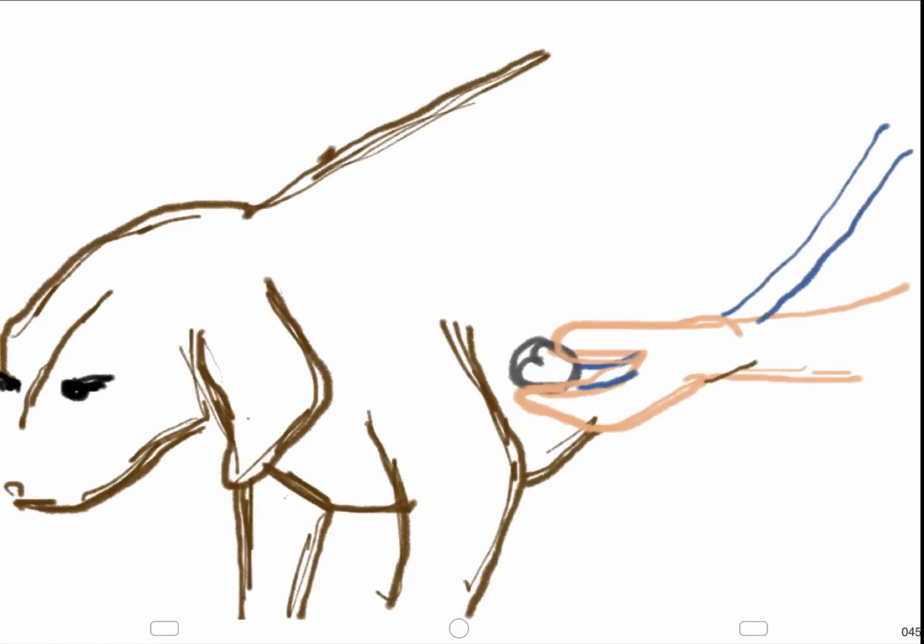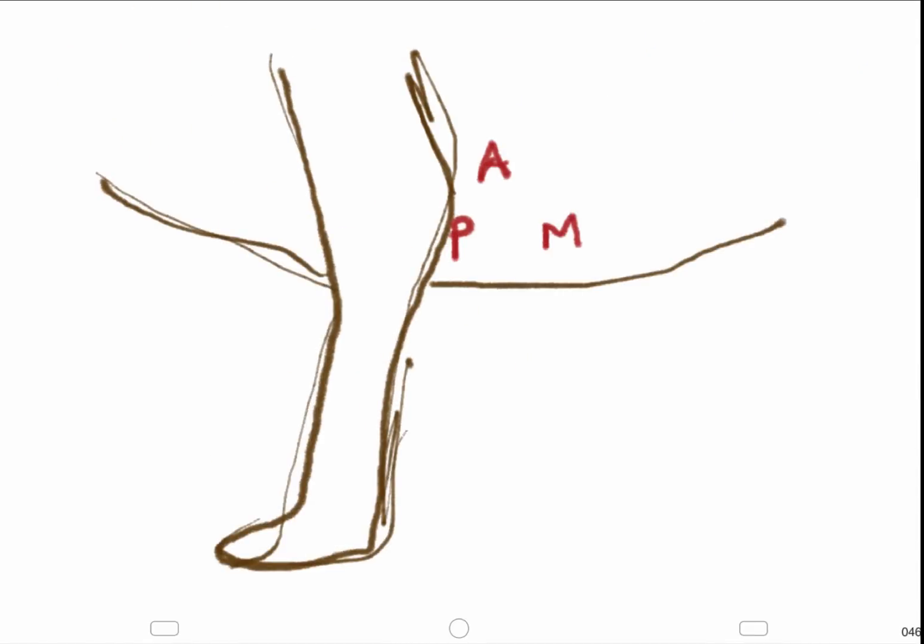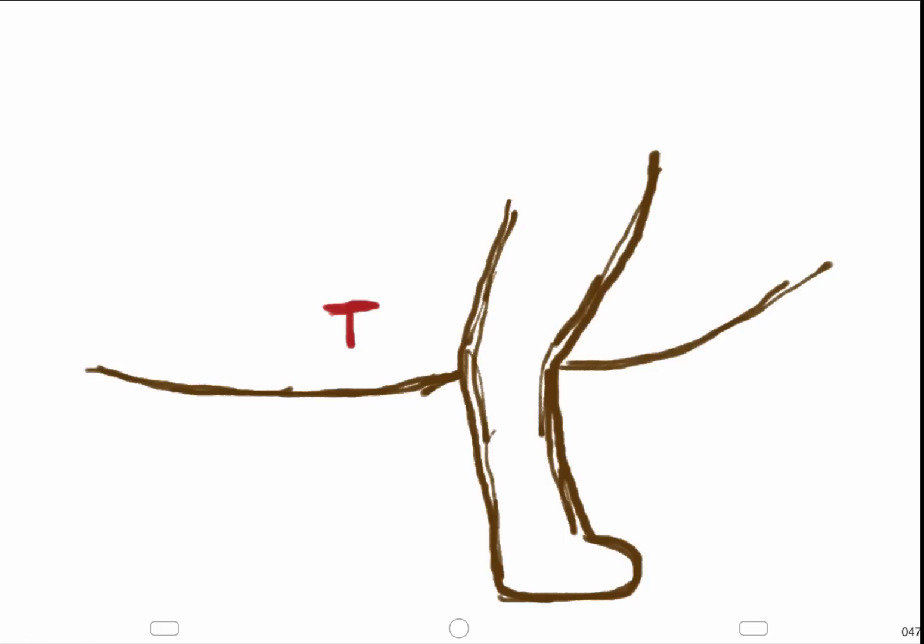Auscultation should be done on a standing dog. It is important to palpate the point of maximum intensity to determine the heart rate. In large dogs there should be three auscultation sites. The mitral valve should be felt at the fifth intercostal area. The aortic valve can be auscultated more dorsal cranially and the pulmonic valve more ventrocranially. The pulse should be palpated simultaneously. The tricuspid valve should be auscultated on the right side.